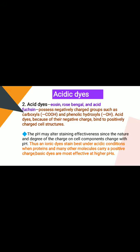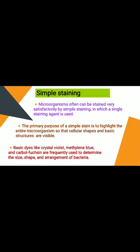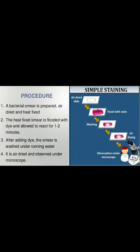In simple staining, microorganisms are stained satisfactorily using a single staining agent. The primary purpose is to highlight the entire microorganism so that cellular shapes and basic structures are visible. Basic dyes like crystal violet, methylene blue, and carbol fuchsin are frequently used to determine the size, shape, and arrangement of bacteria. In the procedure: a bacterial smear is prepared, air dried, and heat fixed. The heat-fixed smear is flooded with dye and allowed to react for one to two minutes. The smear is then washed under running water, air dried, and observed under the microscope.